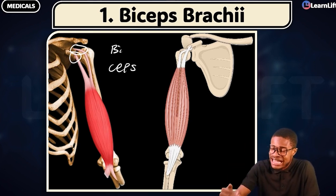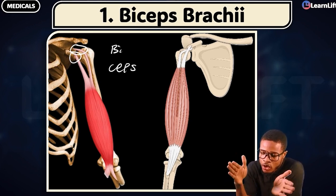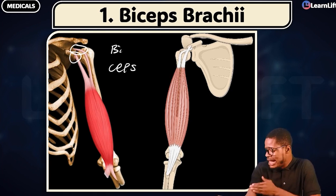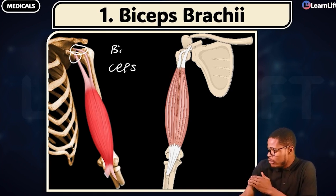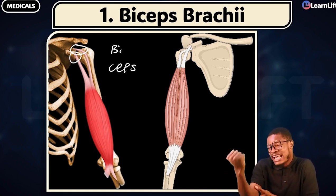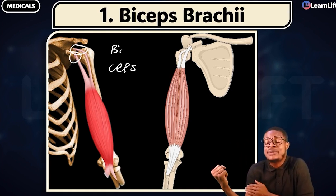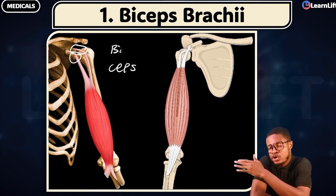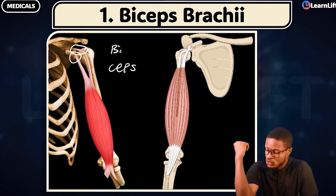We're going to look at their origin, insertion, action, and all of that. First: your biceps brachii. Don't forget that the anterior compartment of the arm — they carry out flexion. They flex, so they are flexor muscles. Your biceps brachii is a flexor muscle.